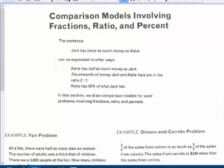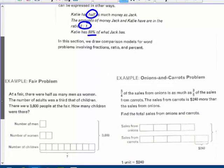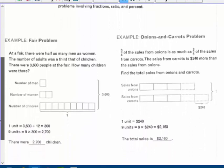Comparison models involving fractions, ratio, and percent. The sentence Jack has twice as much money as Katie could be expressed in other ways. They could say Katie is half as much as Jack, a fraction. The amounts of money of Jack and Katie are in the ratio, Katie has twice as much, of two to one. There's a ratio. Katie has 50% of Jack. There's a percent. In this section, we're going to draw comparison models for word problems involving fractions, ratio, and percent.